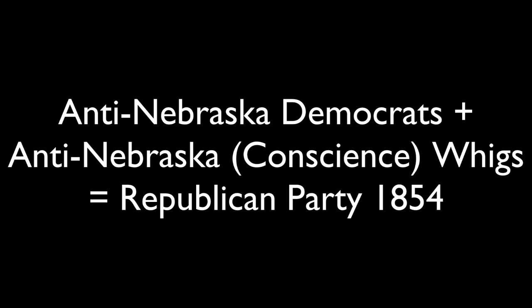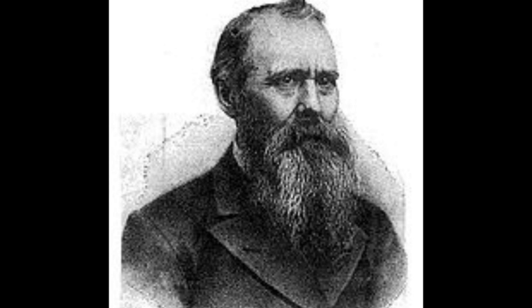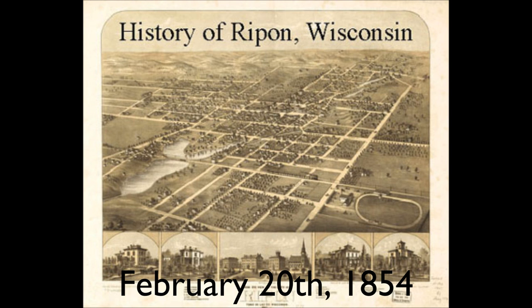These anti-Nebraska Democrats and anti-Nebraska Whigs joined together under the new banner of the Republican Party. Allen E. Beauvais, a former Whig, founded the party, and on the 20th of February, 1854, in Ripon, Wisconsin, they held their first meeting on the topic of anti-slavery.